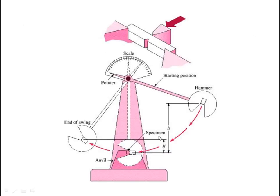This is the specimen, and this is the pendulum. This is the scale, and there is a pointer here. The pendulum or hammer is released from the top and strikes the specimen, which then breaks. This is the end of swing. In another figure, the specimen and hammer are shown more clearly — the hammer strikes the specimen here, and this one breaks.